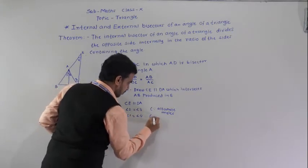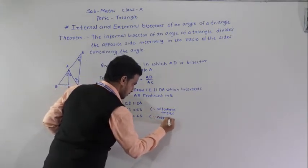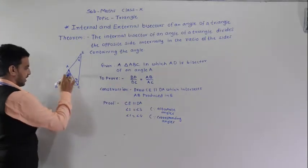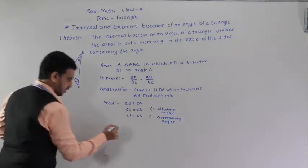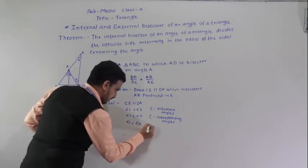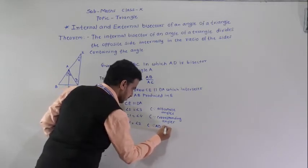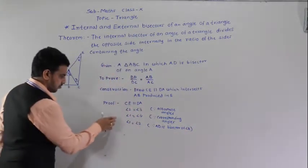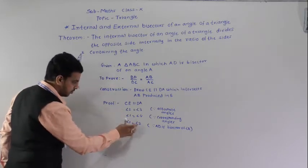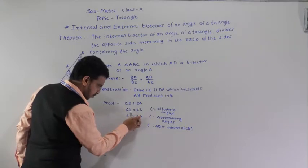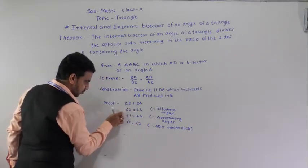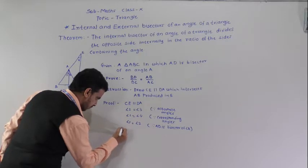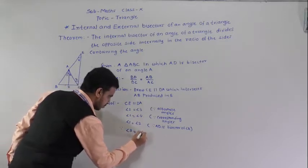Next, angle 1 is equal to angle 4, making a pair of corresponding angles, because AD is parallel to CE and AB is a transversal. Also, since AD is a bisector, angle 1 is equal to angle 2. Therefore angle 1 equals angle 4, angle 2 equals angle 3, and since angle 1 equals angle 2, we get angle 3 equal to angle 4.